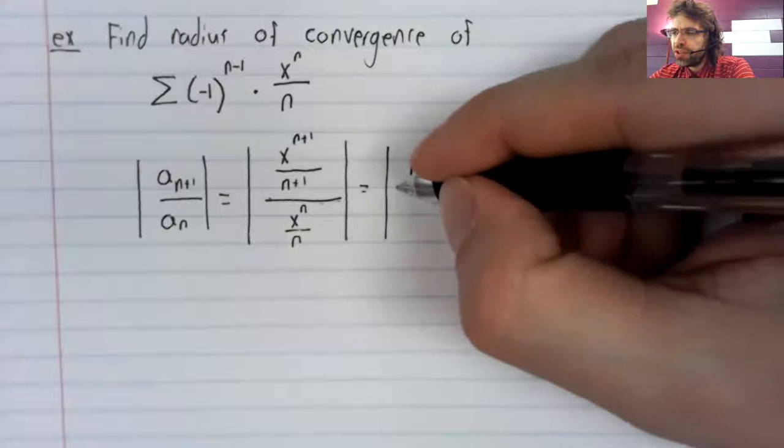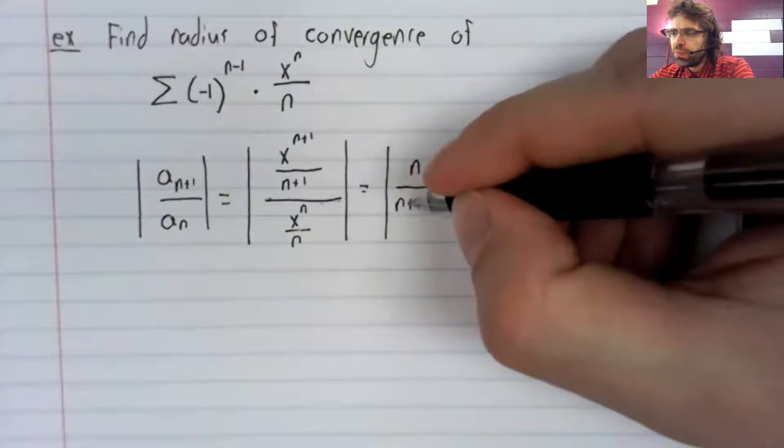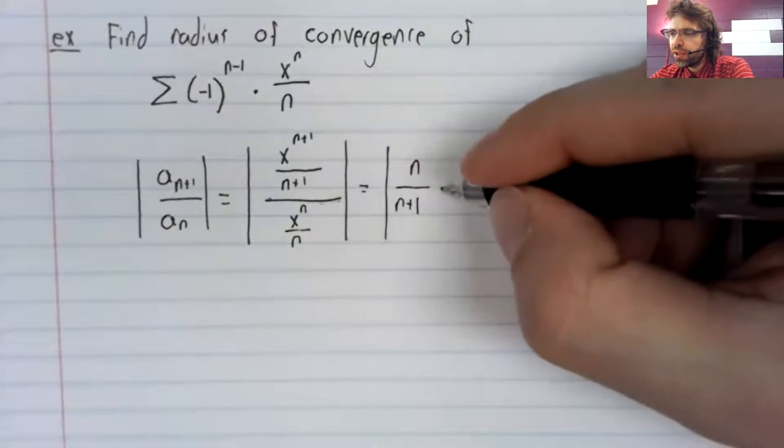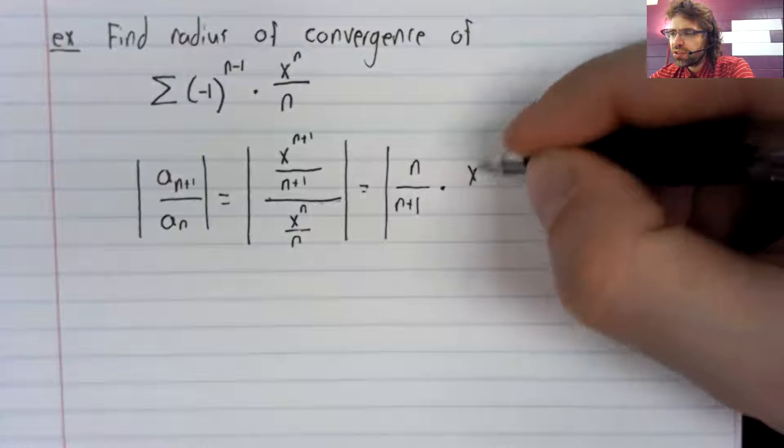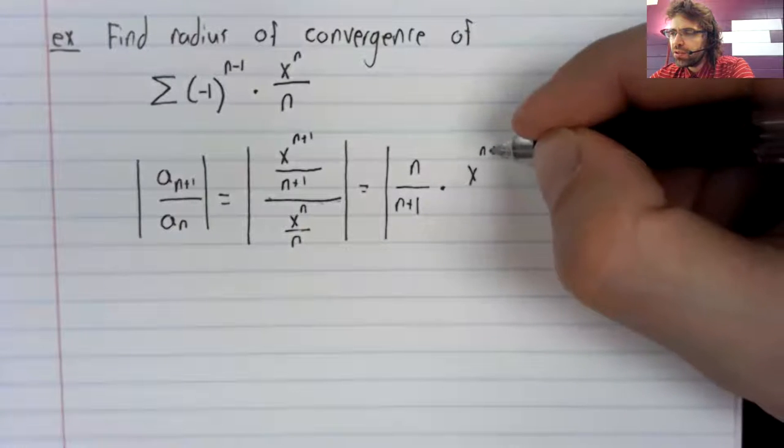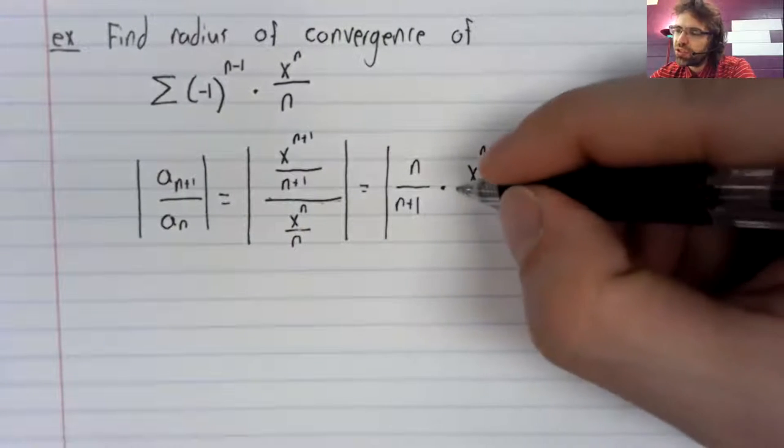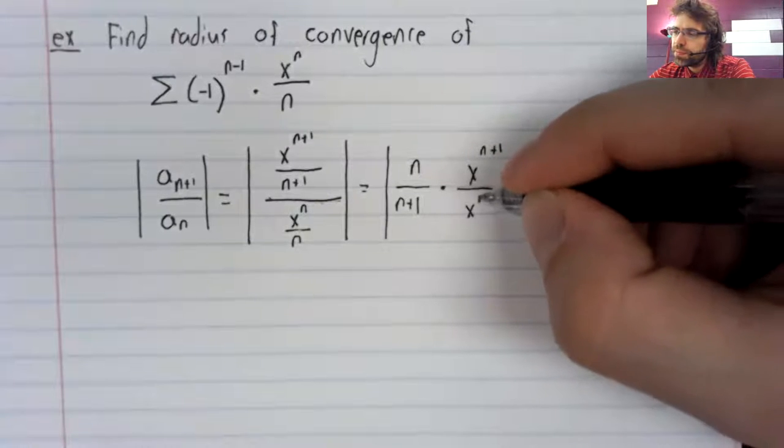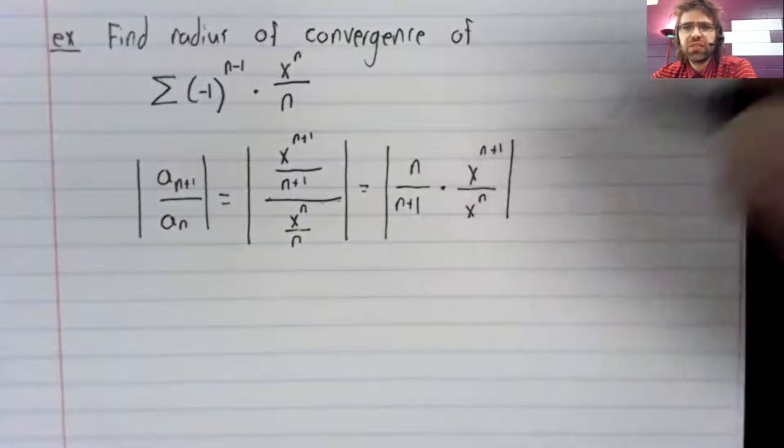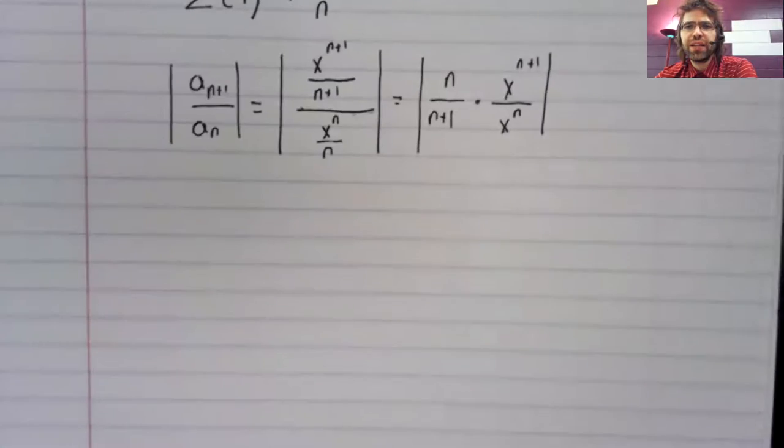We get n over n plus one times x to the power of n plus 1 over x to the power of n.